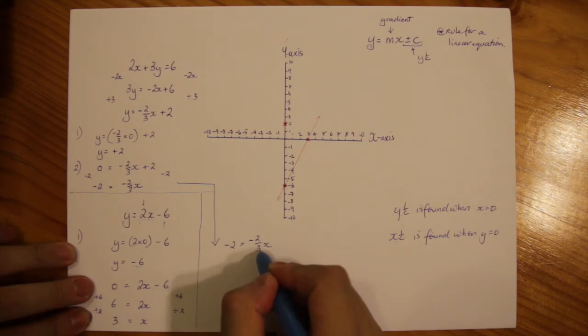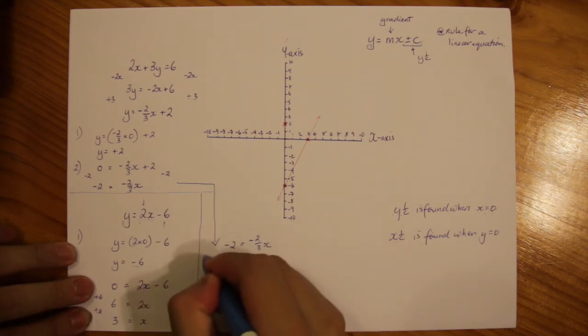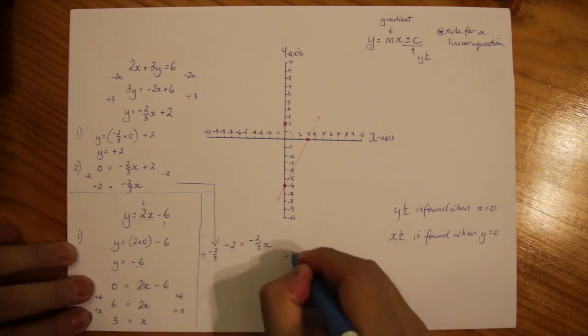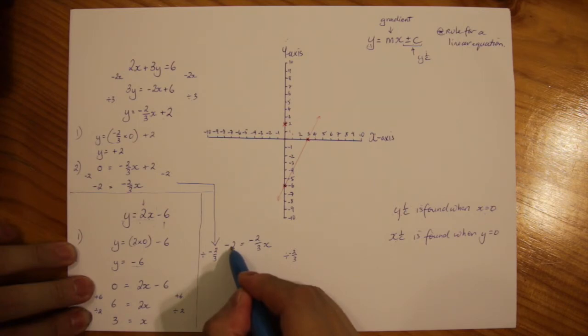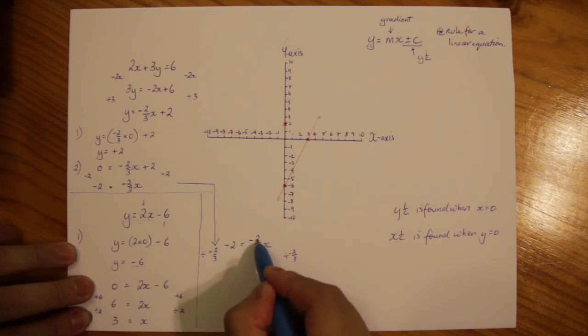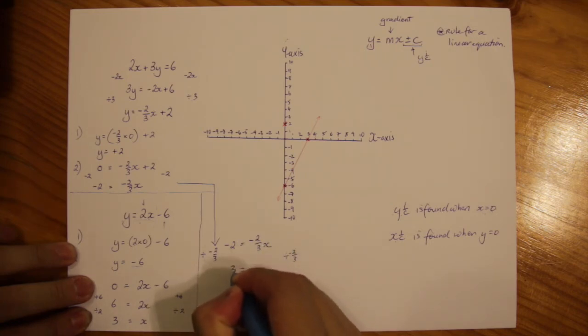So far I have minus 2 equals minus 2 over 3x. I'm going to then divide both sides by minus 2 over 3. What you can do is multiply by 3 first which is minus 6. And then minus 6 divided by minus 2 is going to be just positive 3. So x equals 3.